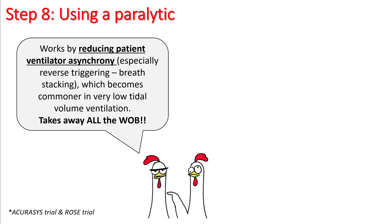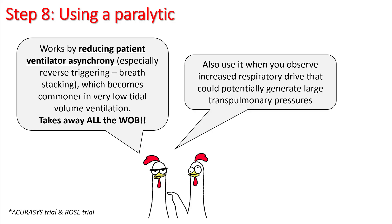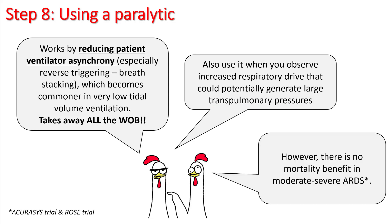The next step is using a paralytic. Paralytics are very useful — they reduce patient-ventilator asynchrony especially when the patient is on very low tidal volumes, and therefore are used mostly in patients with very severe ARDS. They also eliminate all work of breathing. You can also use a paralytic if the patient has increased respiratory drive that could potentially generate large transpulmonary pressures causing more lung injury. However, no mortality benefit has been shown in moderate to severe ARDS with paralytic use.